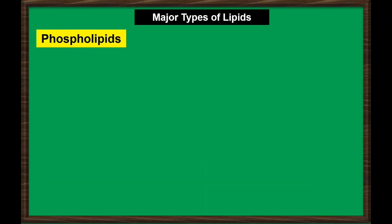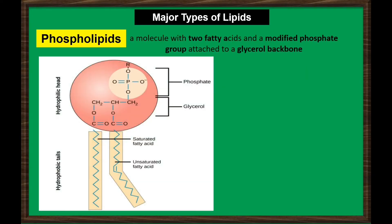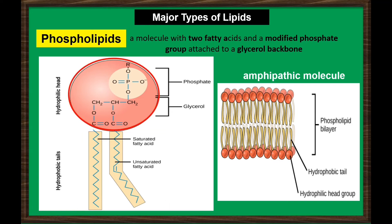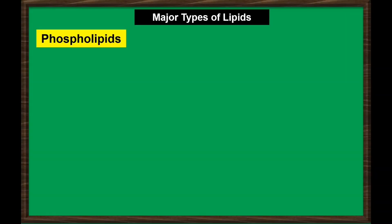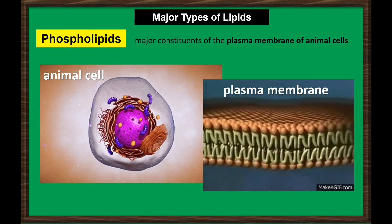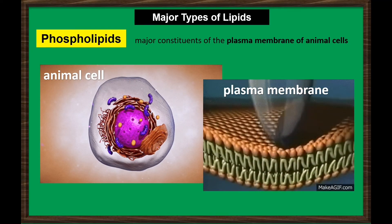Another type of lipids is phospholipids, which is a molecule with two fatty acids and a modified phosphate group attached to a glycerol backbone. A phospholipid is an amphipathic molecule, meaning it has a hydrophobic and a hydrophilic part. The fatty acid chains are hydrophobic and cannot interact with water, whereas the phosphate-containing group is hydrophilic and interacts with water. Phospholipids are major constituents of the plasma membrane, which is the outermost layer of animal cells, and it protects the organelles and facilitates the movement in and out of a cell.